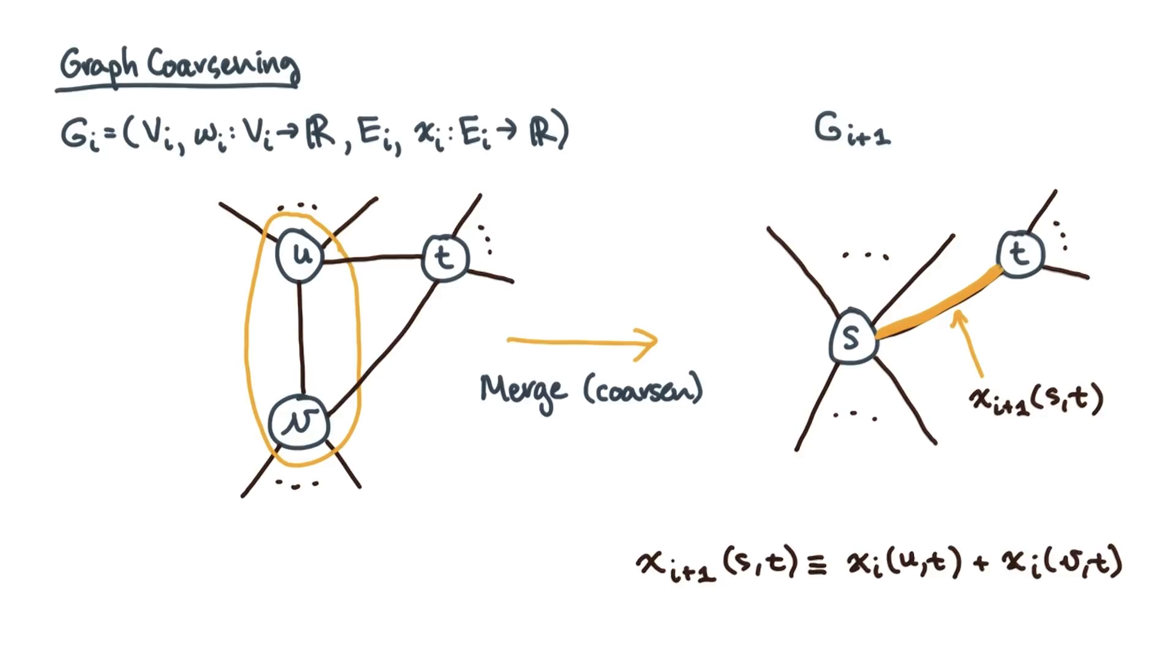The reason we do this is so that if we partition or cut this edge in the coarsened graph, we'll know that it maps to two edges in the original graph. Now before you move on, it's a good idea to check that this procedure makes sense to you.